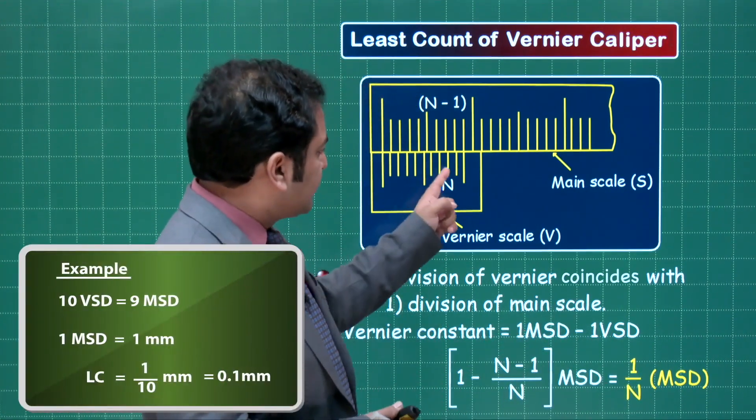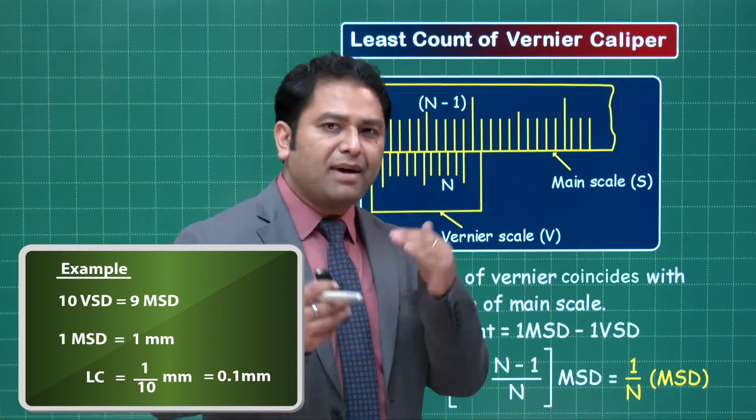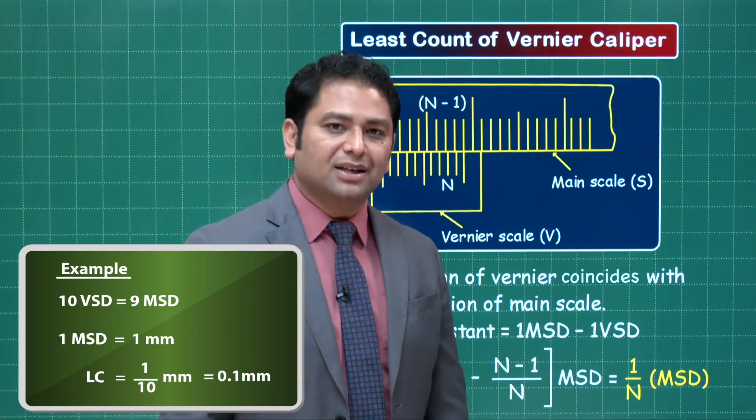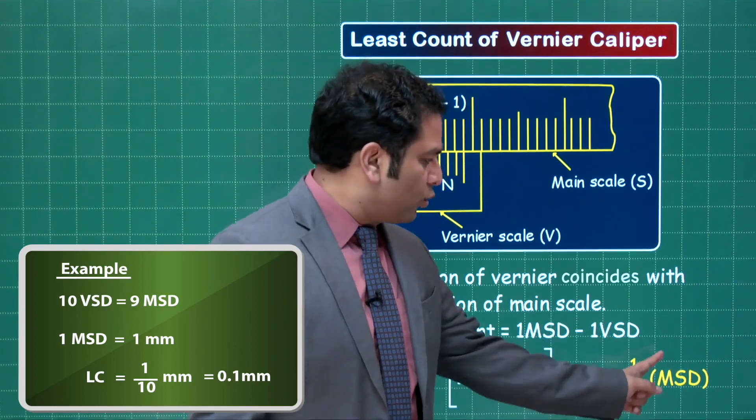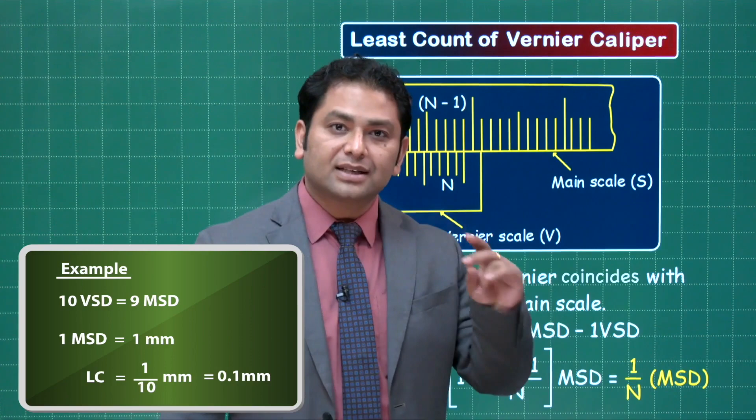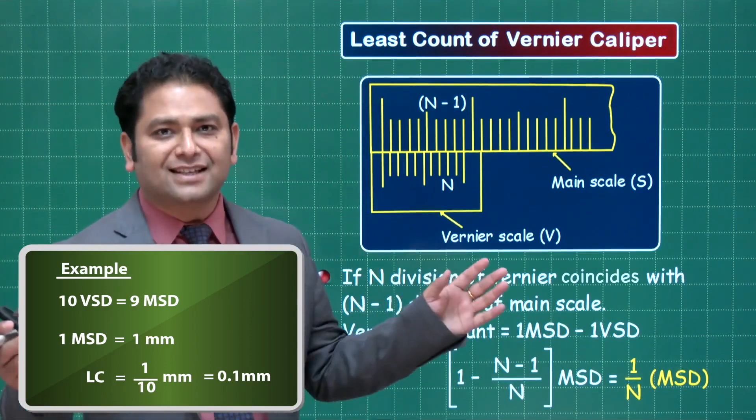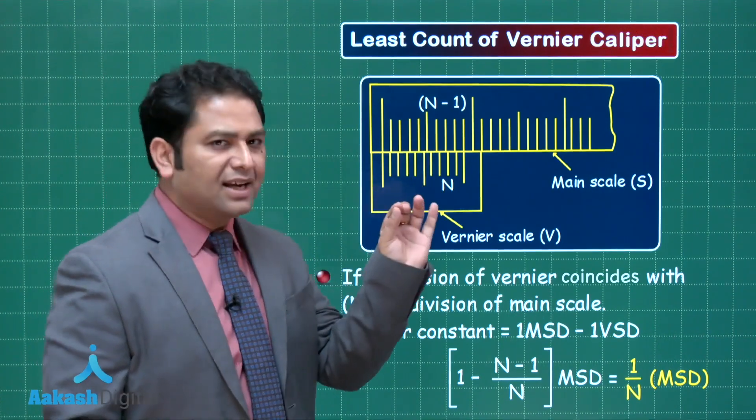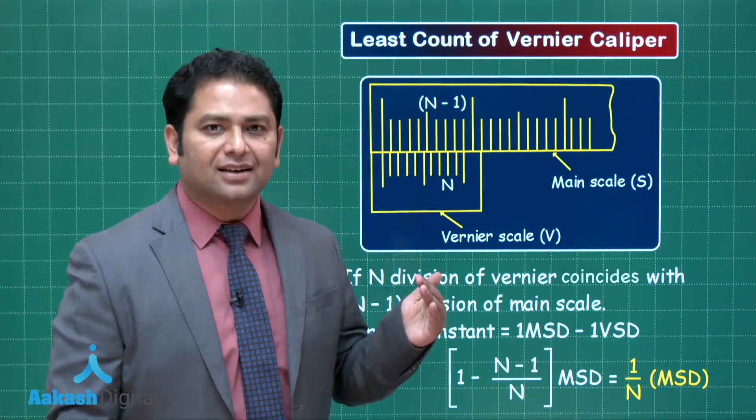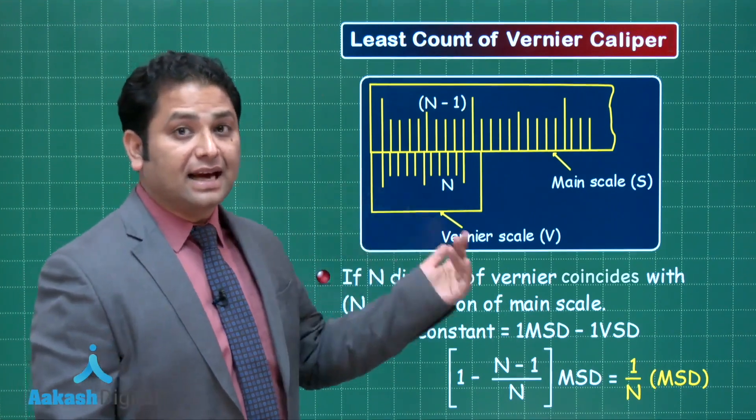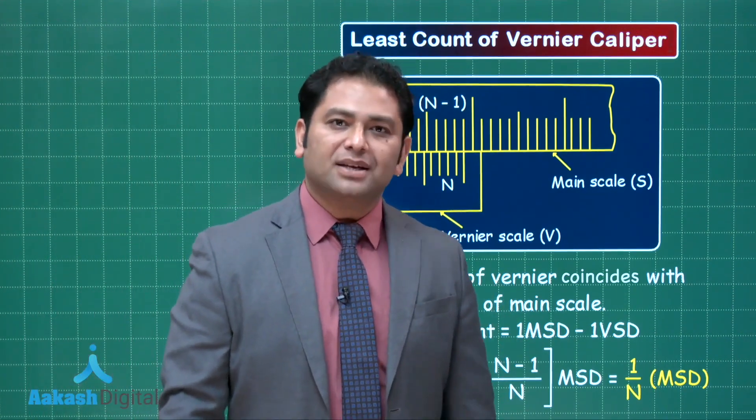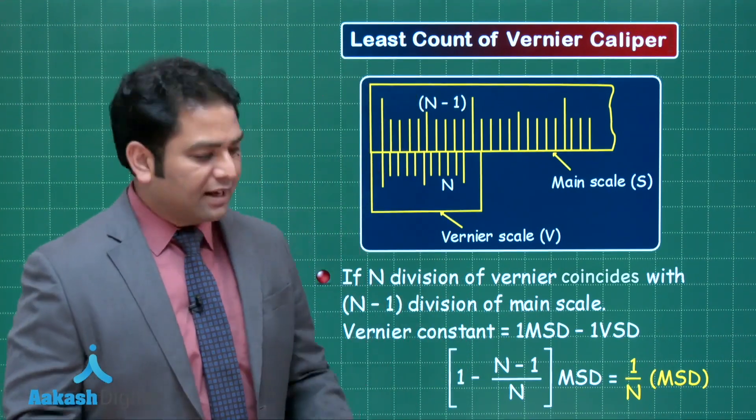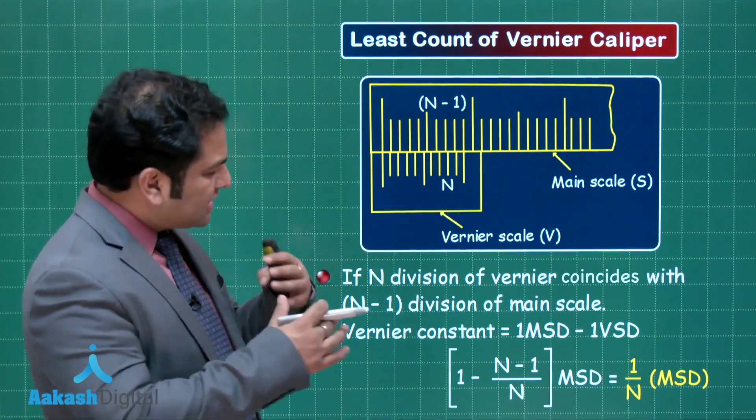For example, suppose there are 10 Vernier divisions which match with 9 main divisions, and one main scale division is a millimeter. The least count will be 1 millimeter by 10, which is 0.1 millimeter. Fantastic! A single scale has 1 millimeter, the Vernier has slightly less, maybe 0.9, but the combination is having 0.1 millimeter. That is quite an interesting factor that really makes the Vernier caliper so special.